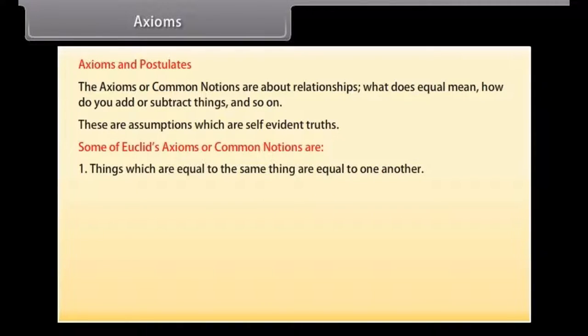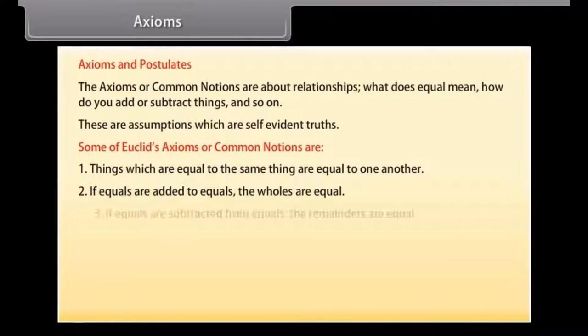Some of Euclid's axioms or common notions are: 1. Things which are equal to the same thing are equal to one another. 2. If equals are added to equals, the wholes are equal.